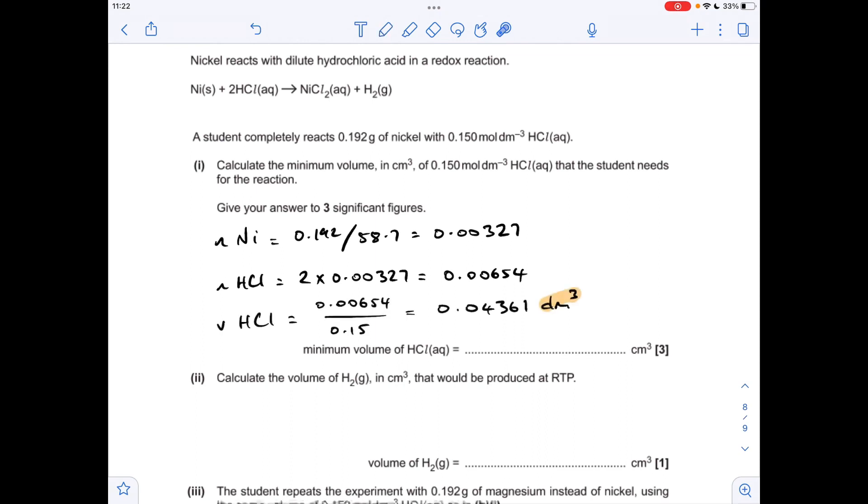The important thing to bear in mind here is the volume that we get here is in decimetres cubed. So we need to multiply this by 1000 to put it into centimetres cubed, which to three significant figures is 43.6.